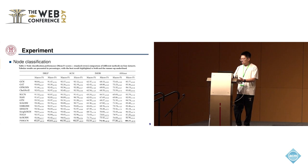In the experimental part, we first conduct the node classification experiment to evaluate the performance of PSHGN. Compared to the baselines, PSHGN outperforms them on four datasets.